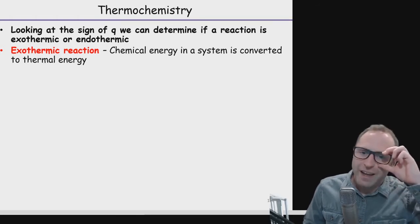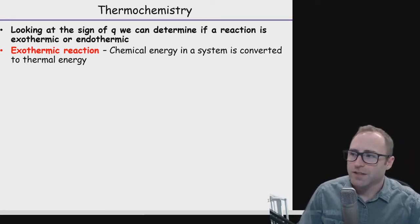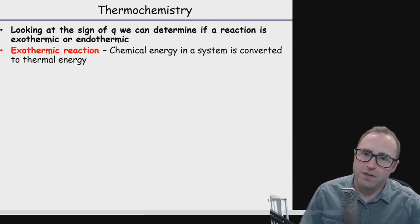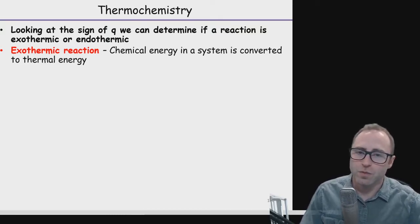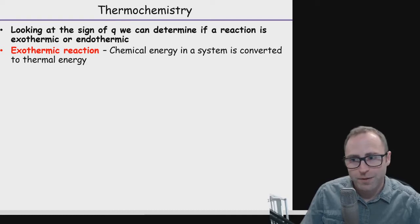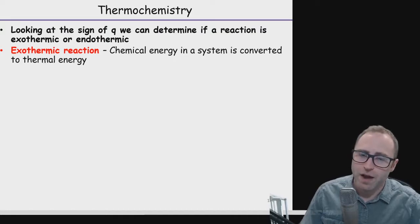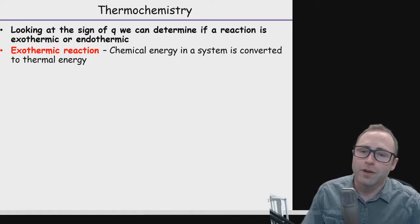By looking at Q for a chemical reaction, we can figure out a bunch of things regarding the physical process. Specifically, we're going to be able to determine whether the reaction is what we call exothermic or endothermic. These are probably terms you've heard before, but we want to make sure we've got good, uniformly understood definitions for these.